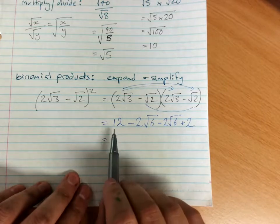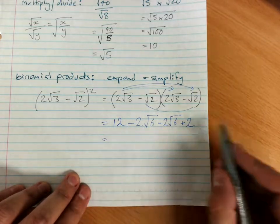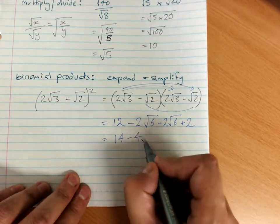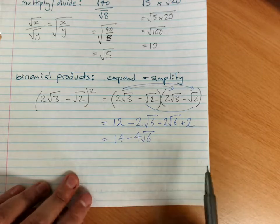Simplify. 12 minus 2 root 6, minus 2 root 6 plus 2. 12 plus 2 is 14. Take away 4 root 6. So we simplify the same way we would as algebra.